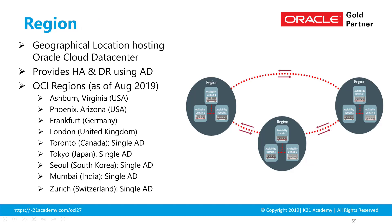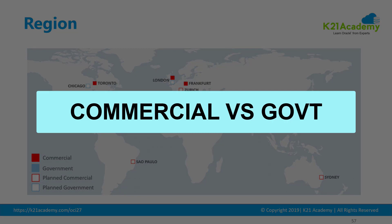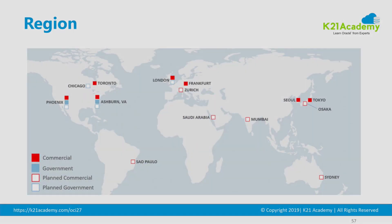One thing to note is that regions added recently have a single availability domain, while the older ones have three availability domains. Within these regions, there are commercial regions and government regions. Commercial regions are available for any type of customer, whereas the government cloud is reserved for government organizations.